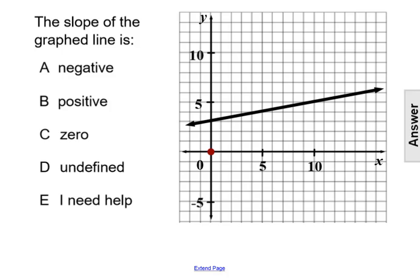The slope of the graphed line is: A negative, B positive, C zero, or D undefined.